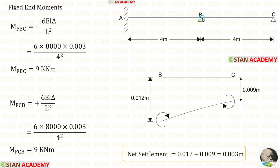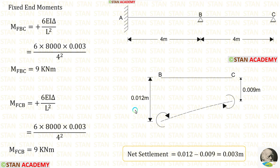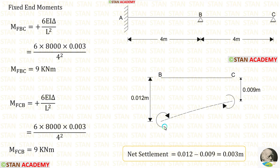Now let us find the fixed end moments in span BC. Support B sinks by 0.012 meters and support C sinks by 0.009 meters. The settlement at B is more than at C, so the net settlement occurs at support B. The net settlement equals 0.012 minus 0.009, giving 0.003 meters. Since the net settlement occurs on the left side, the fixed end moments due to settlement will be positive, as they act in the clockwise direction.